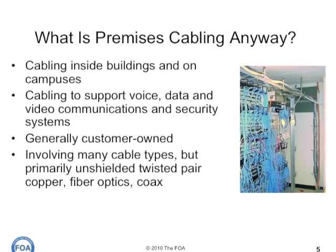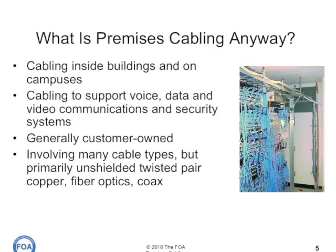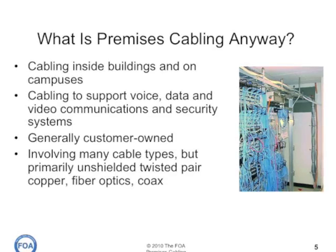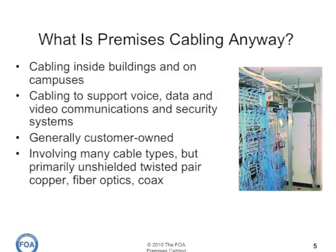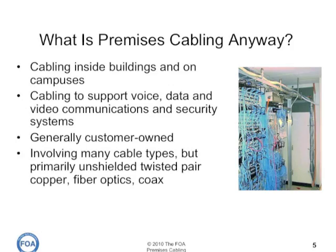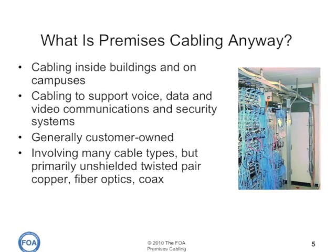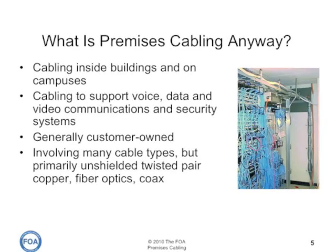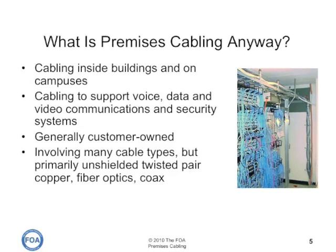So what is premises cabling? Premises cabling is the cabling indoors, inside the premises — inside buildings and on campuses. It's the cabling used to support voice, data, and video communications, as well as security systems and other types of systems that can operate over low-voltage cabling.